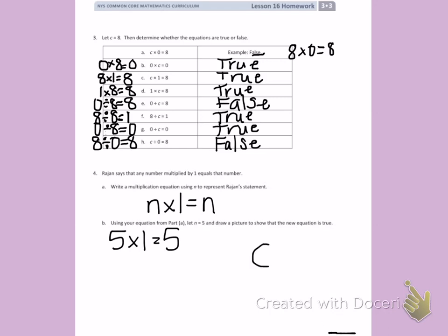If I have that as a number bond, 5 is my total. I have 5 groups. And the size of each group is 1. 1, 2, 3, 4, 5. 5 times 1 equals 5.